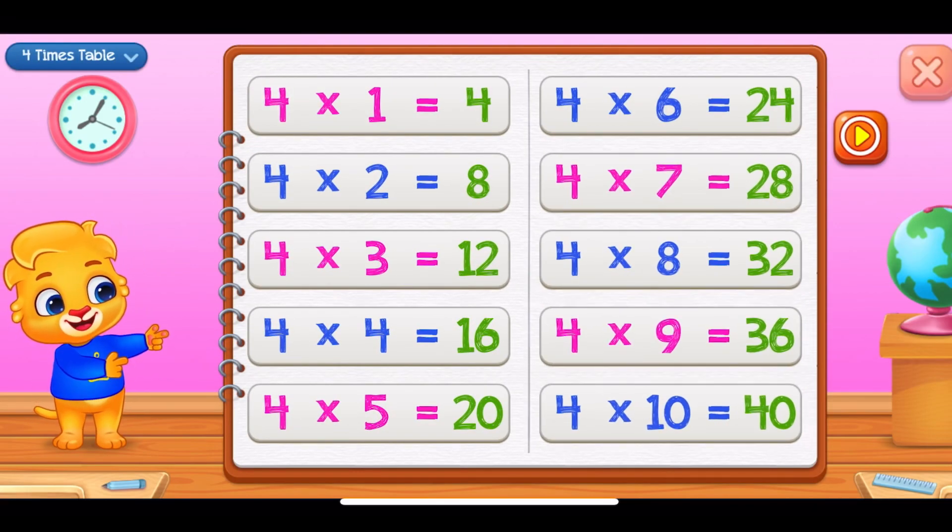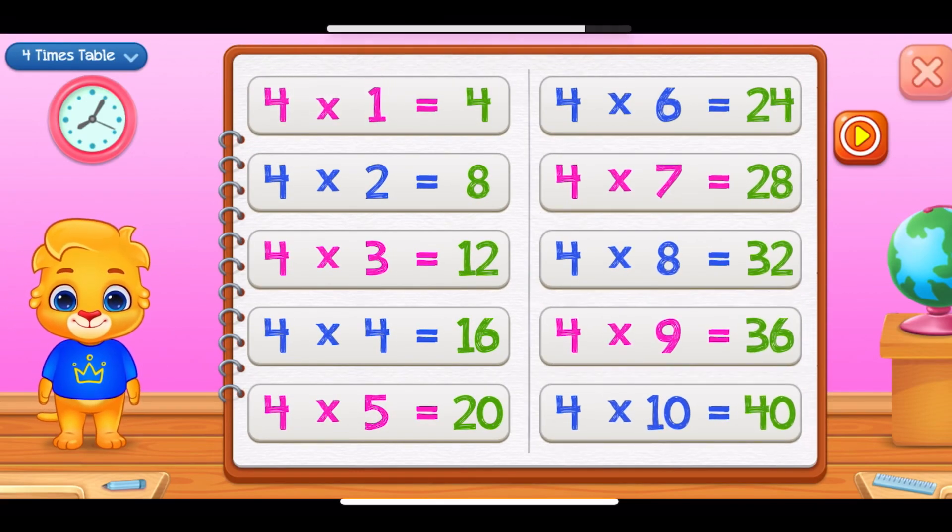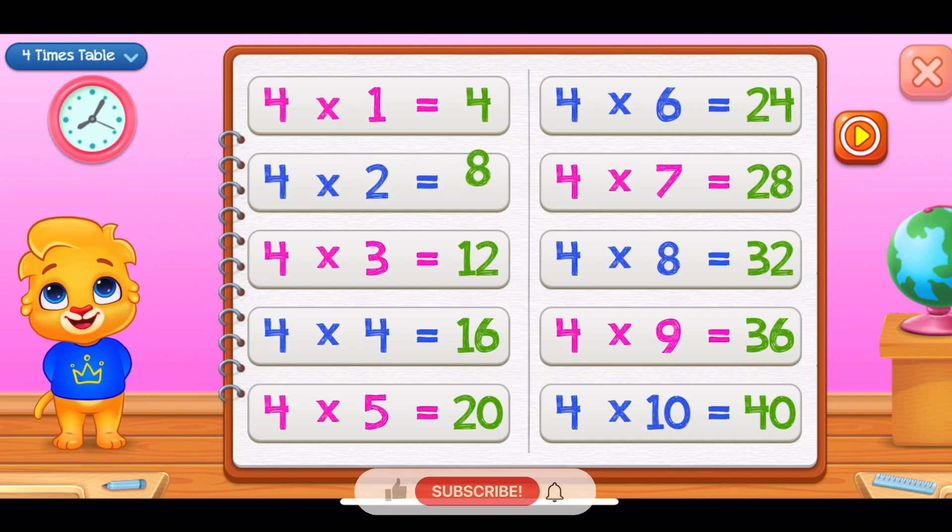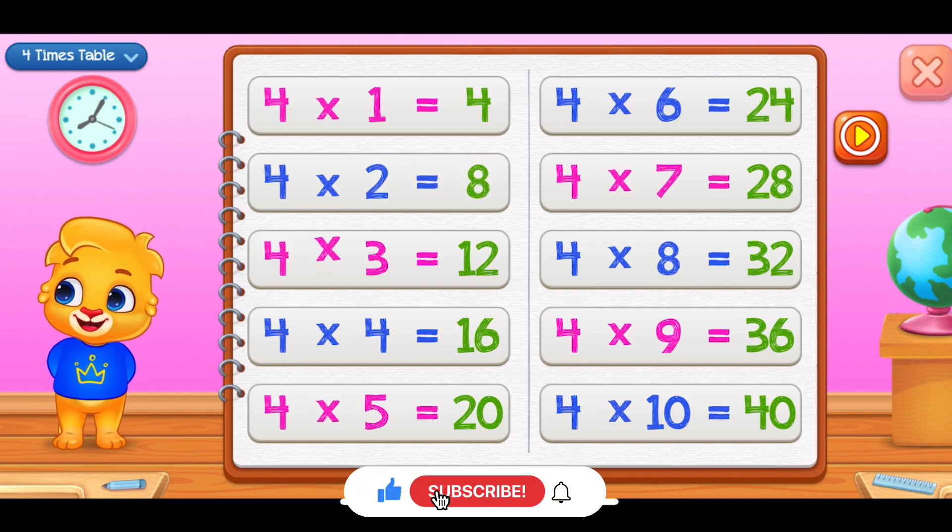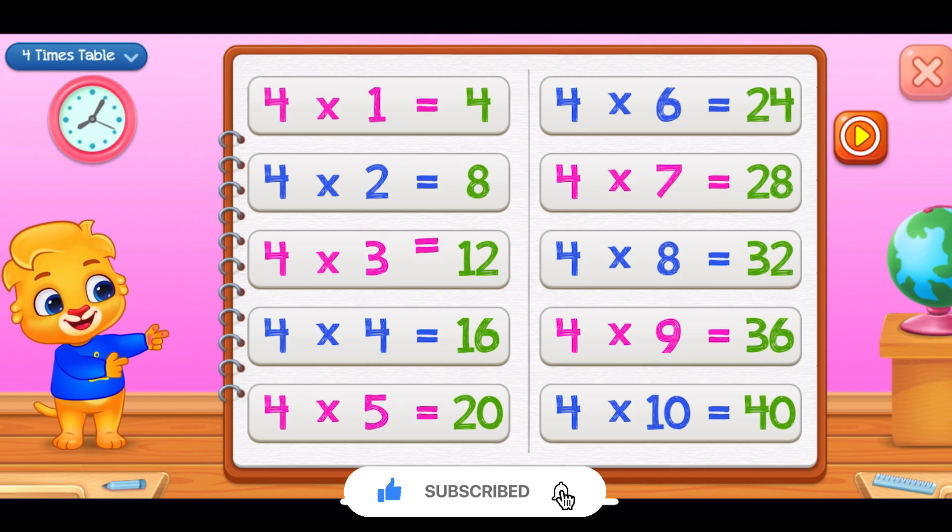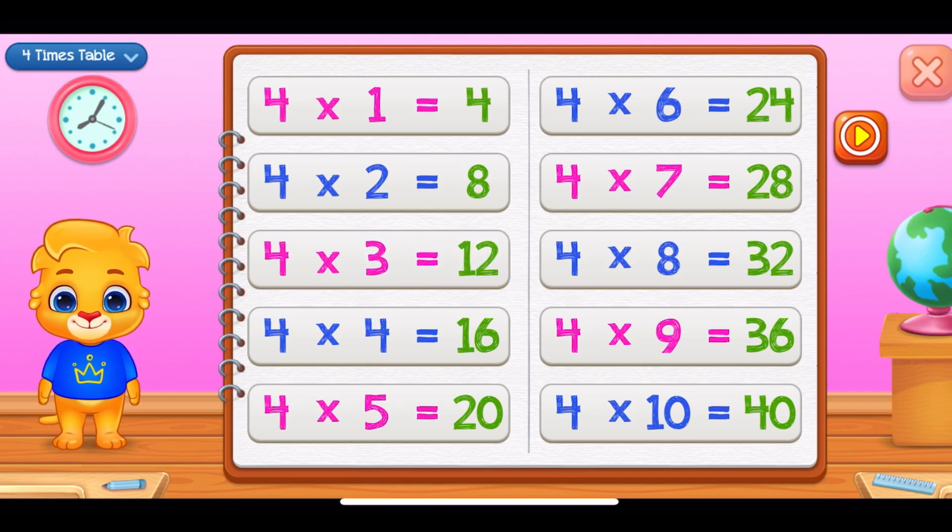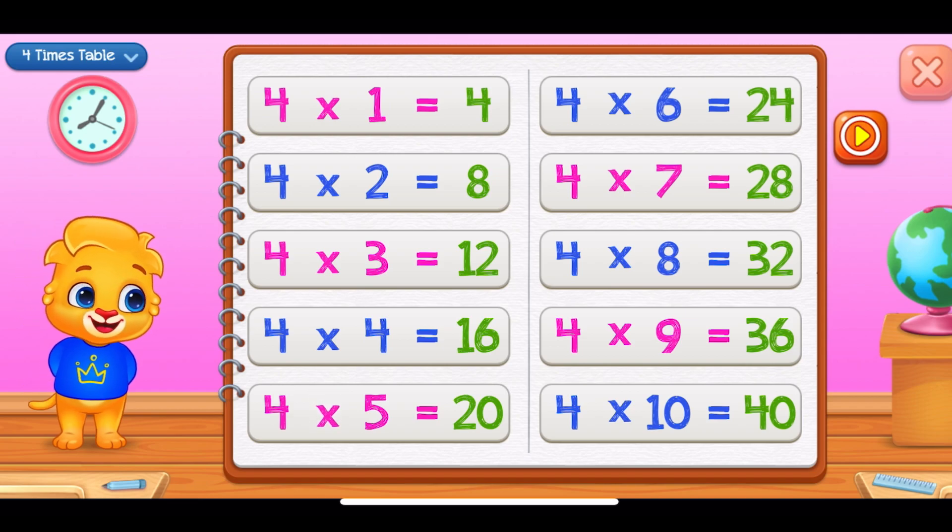4 times 1 equals 4. 4 times 2 equals 8. 4 times 3 equals 12. 4 times 4 equals 16. 4 times 5 equals 20.